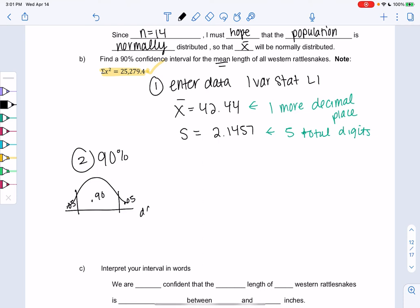So we have 0.05 left over. And then we need degrees of freedom. So degrees of freedom would be 14 minus 1 or 13. So you're going to go to the T.05 column on that table. And then go down to the 13th row.